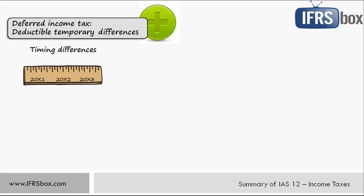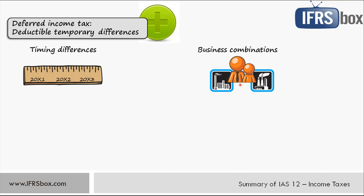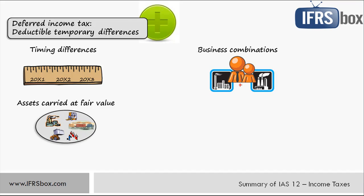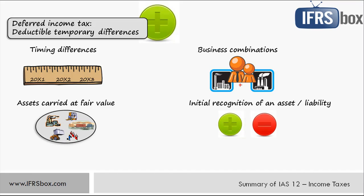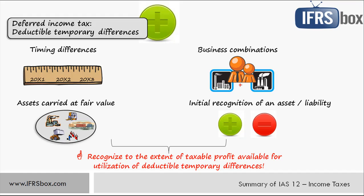Now let's look at deductible temporary differences that give rise to a deferred tax asset. Timing differences arise when a liability is recognized in one period but allowed to be deducted for tax purposes in another period — for example, healthcare liabilities that are tax deductible when benefits are paid to employees but must be recognized when employees render the service. Business combinations where assets or liabilities are revalued downwards to fair value at the acquisition date but no tax adjustment is made also create deductible temporary differences. An entity shall recognize deferred tax assets to the extent that it is probable that taxable profit will be available against which the deductible temporary difference can be utilized.